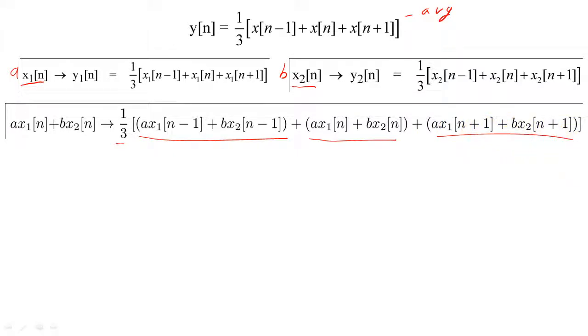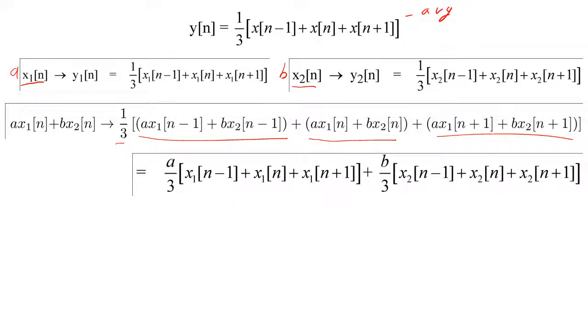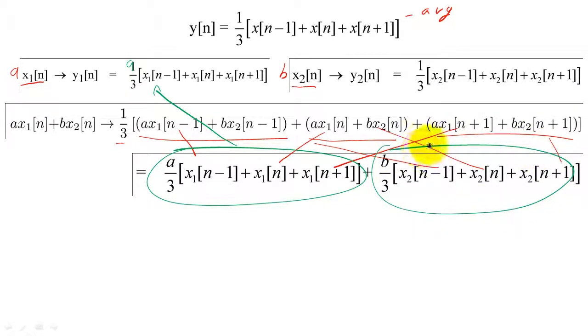If we rearrange the output, we can group the x sub 1 terms together and the x sub 2 terms together, and then once we rearrange, it is easy to see that the left side is equal to a times y sub 1 of n, and the right side equals b times y sub 2 of n. Linearity holds for this system.